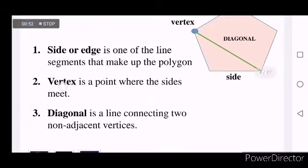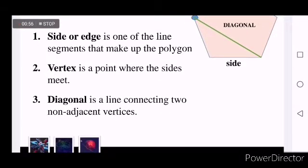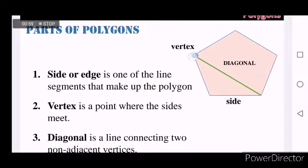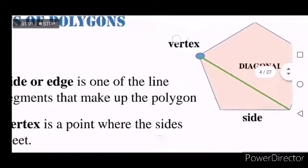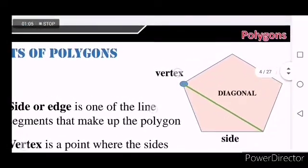The next is called vertex. It is a point where the sides meet. So the blue point here is called the vertex, and on the figure we have five vertices.